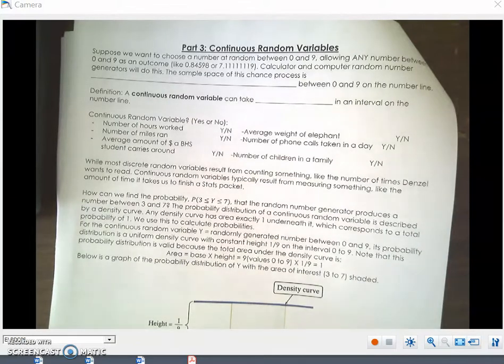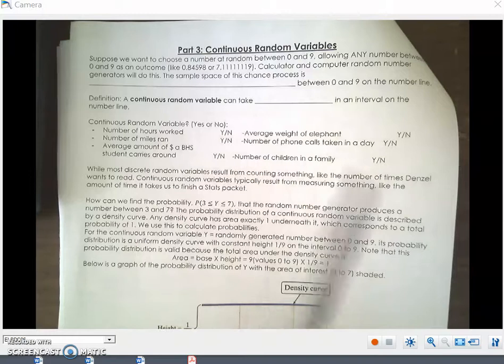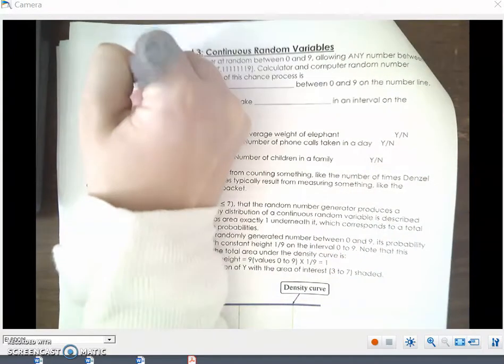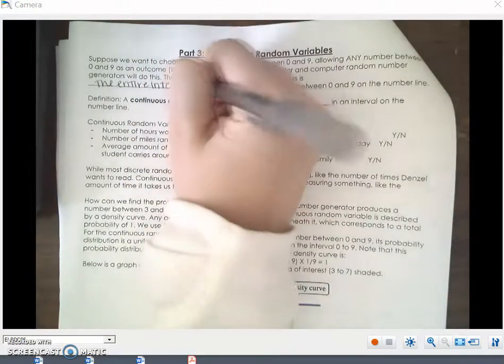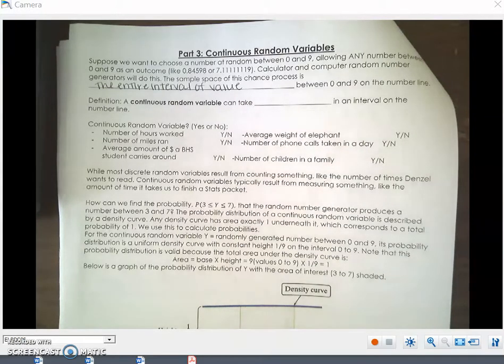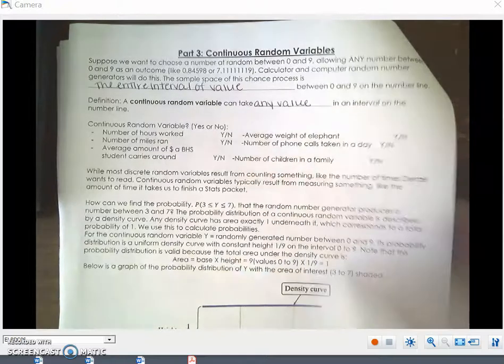But suppose we want to choose a number of random between 0 and 9, allowing any number between 0 and 9 as an outcome, like 0.84598 or 7.11119. Calculator and computer random number generators will do this. The sample space of this chance process is the entire interval of values between 0 and 9 on the number line. So a continuous random variable can take any value in an interval on the number line.